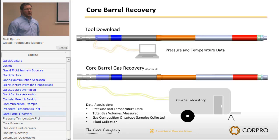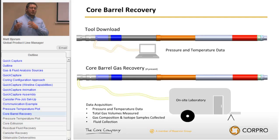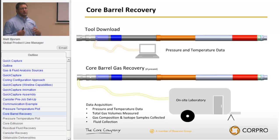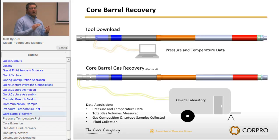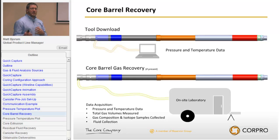We start by downloading all pressure and temperature data, then go into the core barrel recovery process. We're working with all the major laboratories around the world, teaching them the specifics of the tool and developing different handling procedures and transfer processes. In the data acquisition process, we bring it to the laboratory, measure and record pressures and temperatures, take all the gas out of the barrel first — measuring it using empirical methods to get actual gas content numbers — then collect portions for gas composition and isotope measurements at a further point.